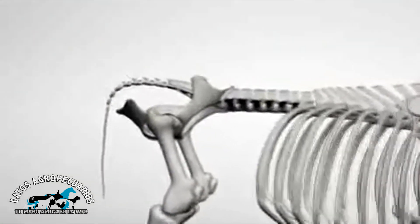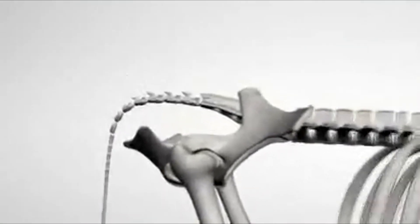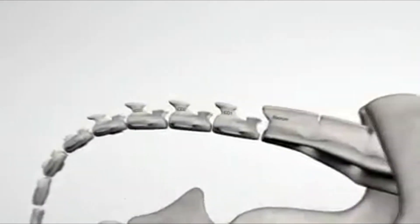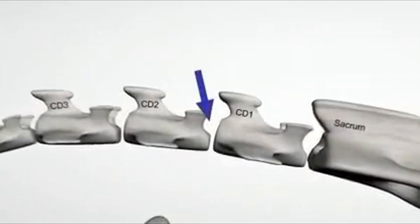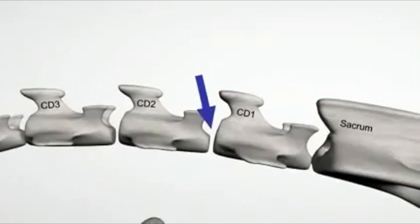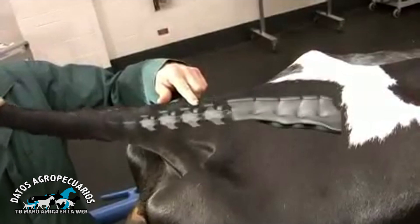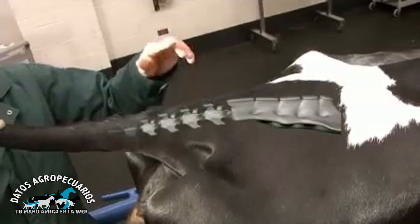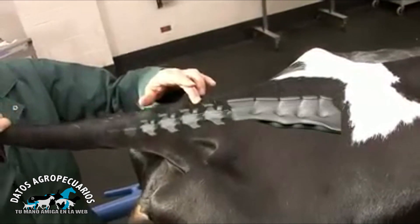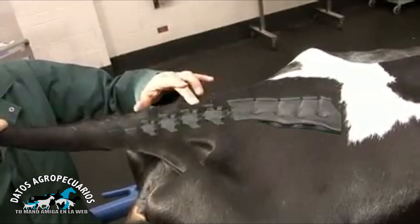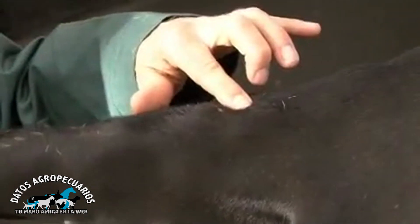Epidurals are administered in the epidural space between the first and second caudal vertebrae. This space is identified by gently lifting the tail up and down while simultaneously palpating for the first freely movable joint caudal to the sacrum.